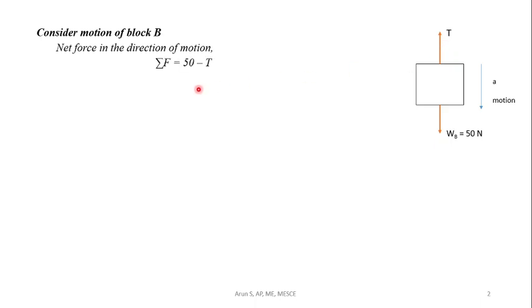Now we will consider the motion of block B. Weight acts vertically downward, tension along the cable upward. Motion is assumed to be in the downward direction. Net force in the direction of motion is WB minus T, that is 50 minus T. Applying Newton's second law, sigma F equals M A. Net force is 50 minus T equals mass WB by 9.81 into A. That will be our equation number 1.